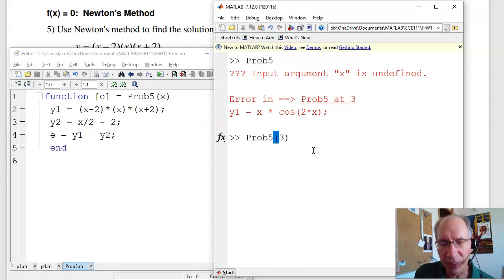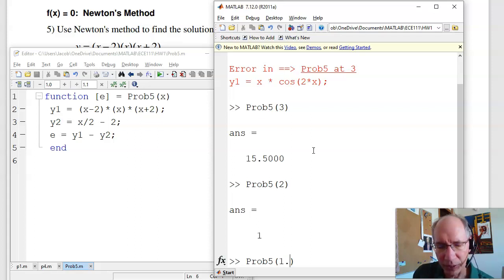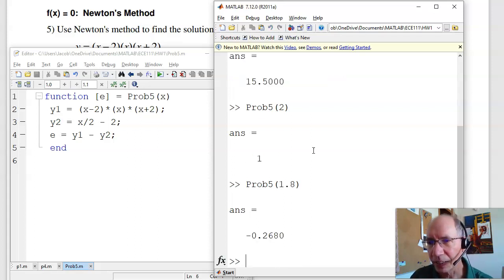Now problem five does exist. I can say what is problem five of three? Is the solution to the two equations, two unknowns, equal to three? And nope, the difference is 15.5. Is it equal to two? That's better. Is it 1.8? I can guess, guess again, guess again. Or I can use California method, Newton's method, interval halving.